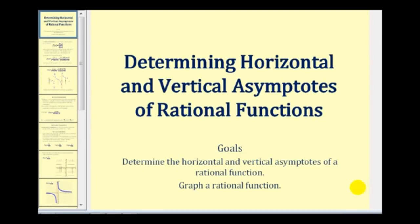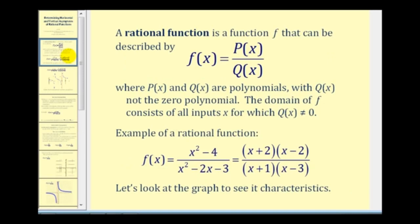Welcome to a lesson on determining the horizontal and vertical asymptotes of a rational function. A rational function is a function that can be described as a quotient of two polynomials, where q of x is not the zero polynomial, and the domain would be all values of x that don't make q of x or the denominator equal to zero.